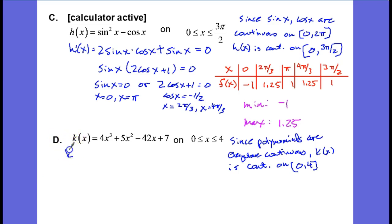Let's take the first derivative, k prime of x. Using the power rule we take the derivative of the polynomial: 3 times 4 is 12x squared, power times base down 1, 2 times 5 is 10x minus 42, set that equal to 0.